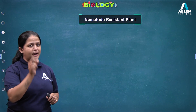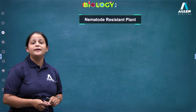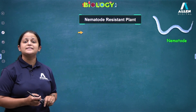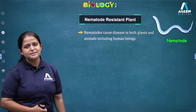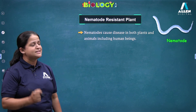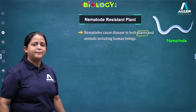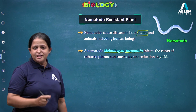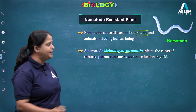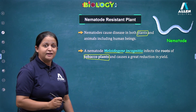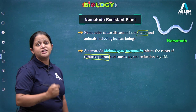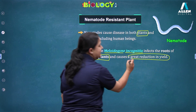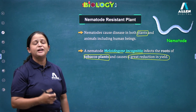In this particular approach, I have taken one topic, and that is the development of nematode resistant plants. We know that a nematode is a type of worm, and this worm causes disease in both plants as well as animals. A particular nematode called Meloidogyne incognita infects the roots of a commercial plant known as the tobacco plant. Tobacco is a highly economically important crop, and when this nematode infects the plant, it is a great loss to farmers because it reduces the yield of tobacco.